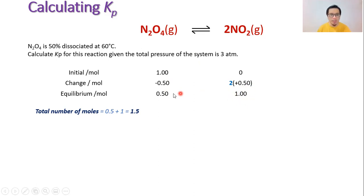The equilibrium number of moles of N2O4 is 0.5. Be sure to calculate the total number of moles at equilibrium. In this case, the total number of moles is 1.5 moles, as a result of 0.5 plus 1 mole of NO2. This is very important because we need to calculate the partial pressure of each gas.